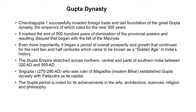The Gupta Empire stretched across northern, central, and parts of southern India between 320 AD and 550 AD. Shri Gupta I, who ruled between 270 AD and 290 AD, was ruler of Maghada — now modern Bihar — and established the Gupta dynasty with Patliputra (now Patna) as its capital. The Gupta period is noted for its achievements in the arts, architecture, science, religion, and philosophy. Scholars like Kalidas, Panini, Varahmihir were leaders in various fields and presented their classic works to the world.